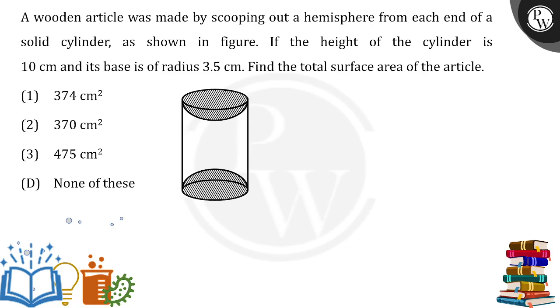If the height of the cylinder is 10 cm and the base radius is 3.5 cm, find the total surface area of the article. Volume is not asked here. Since the hemispheres are identical, don't do the calculation two different times. So the height is 10 cm and the radius is 3.5 cm.